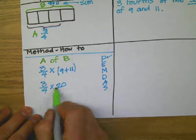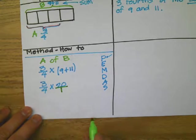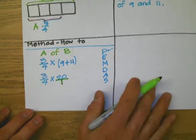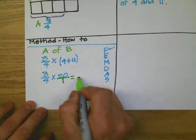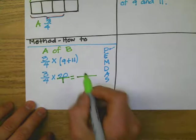Once we do that, then we can start multiplying. We can rewrite it like this. Three times 20. Four times one equals four.